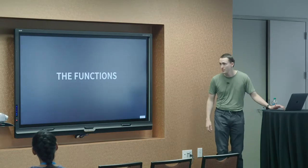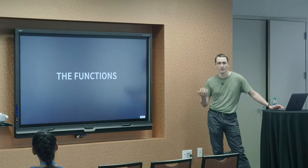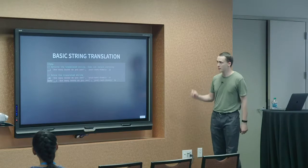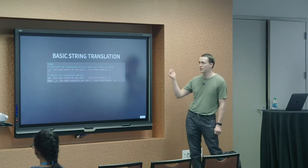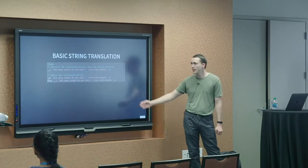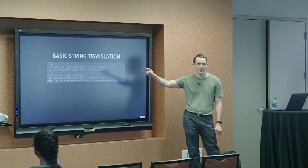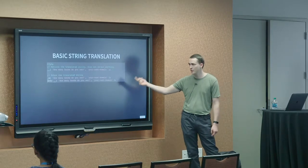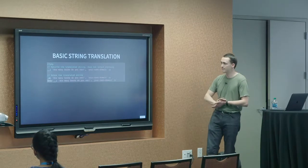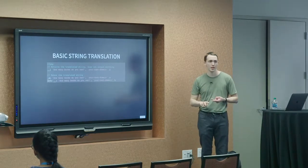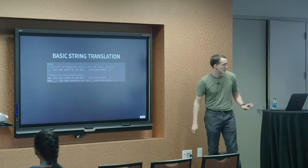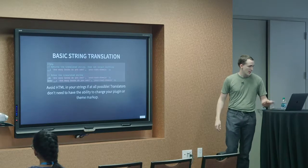So then we move on to the functions that you would use as a developer in your code to actually have everything be able to be translated. So for basic string translation, you'd use the double underscore function. It's literally two underscores. It also has a variation where you specify underscore e, and it is equivalent to just echoing the double underscore function. Both of those functions take two arguments. The first is your text, and the second is your text domain.